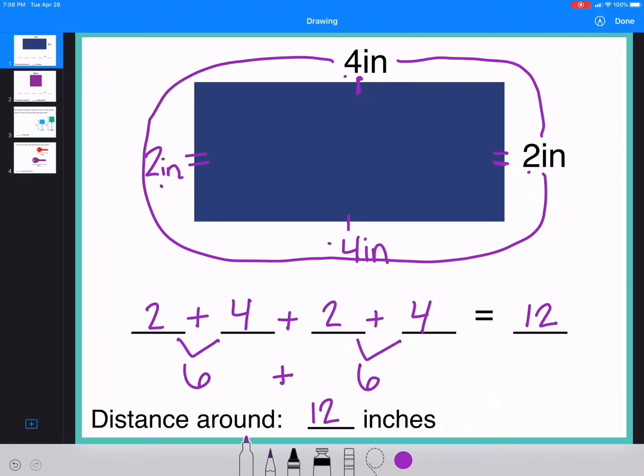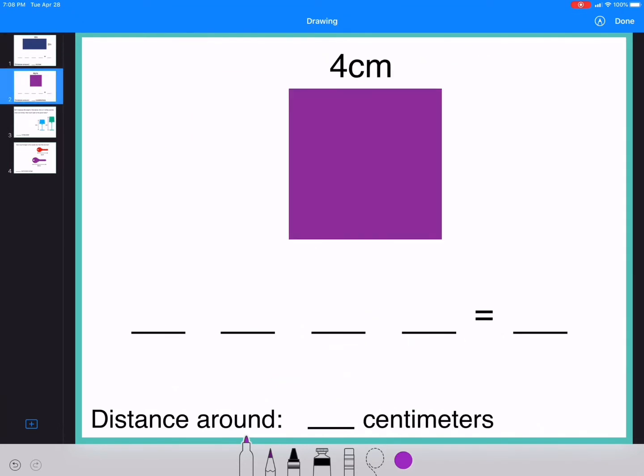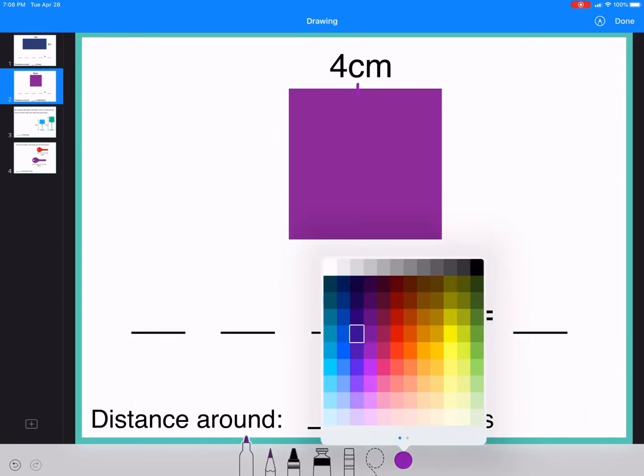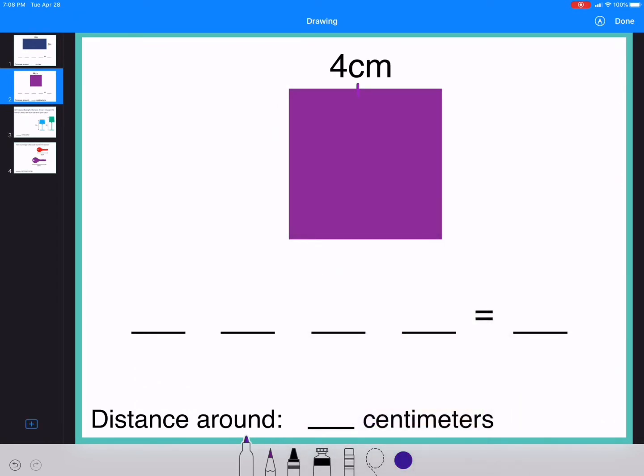Alright, let's look at that one more time. Here, only one side is marked saying that it is 4 centimeters. We can see that this shape is a square. So knowing what I know about a square, all four sides are the same.